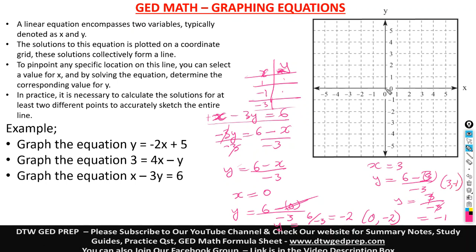Let's plot this. When X is zero, Y is negative 2 — we plot that point. And when X is positive 3, Y is negative 1 — we plot that point here. We draw our line. This would be the graph — the solution — of this particular linear equation. This is how you graph equations on your coordinate grid.